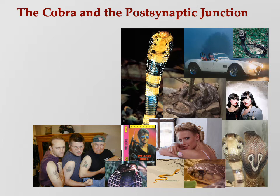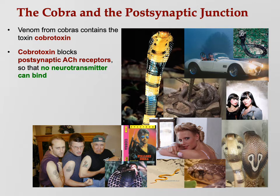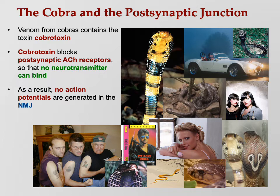So we saw acetylcholinesterase inhibitors like nerve gas that work in the synaptic cleft. Now let's look at something that works at the neuromuscular junction itself. Venom from cobras contains a toxin called cobra toxin, which blocks post-synaptic acetylcholine receptors so that no neurotransmitter can bind. There's plenty of acetylcholine in the synapse wanting the muscle to contract, but the toxin blocks the receptor so acetylcholine can't attach. No action potentials are generated, no muscle action potentials — the result is flaccid paralysis.